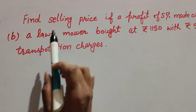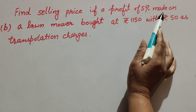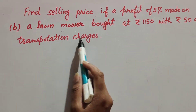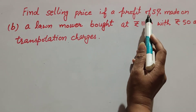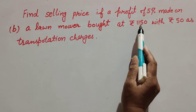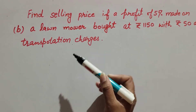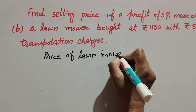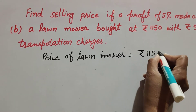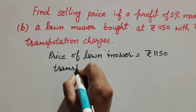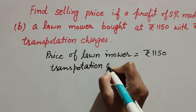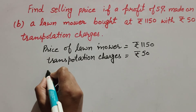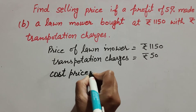Now we move to part B: find the selling price if a profit of 5 percent is made on a lawn mower bought at rupees 1150 with rupees 50 as transportation charges. We need to find selling price, profit is 5 percent, lawnmower price is 1150 and transportation charges are rupees 50. The price of the lawnmower is rupees 1150 and transportation charges are rupees 50.